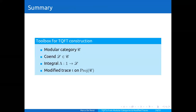Let me give a summary of the algebraic ingredients. In our toolbox for constructing TTFTs we need: a modular category C; a co-end for the inner morphism functor of this modular category, which exists and has a rich structure since C is modular; an integral λ, which is a morphism from 1 to L and also exists; and a modified trace on the ideal of projective objects, which exists thanks to Geer, Kujawa, and Patureau.